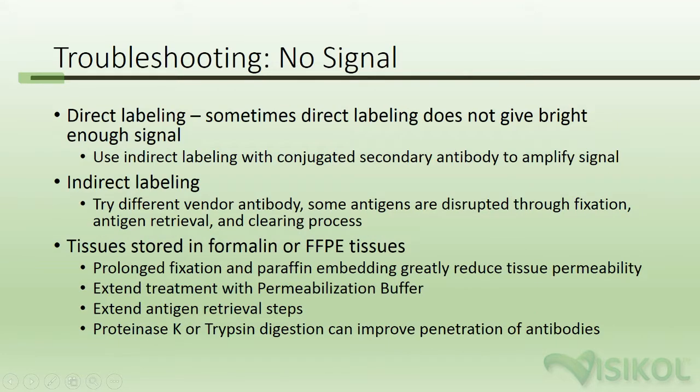What do you do if you see no signal? If you've used direct labeling, direct labeling sometimes does not give bright enough signal for three-dimensional labeling; you should use indirect labeling with a conjugated secondary antibody to amplify the signal. If you've used indirect labeling, you should try a different vendor's antibody. Some antigens are disrupted through fixation, antigen retrieval, and the clearing process and are not compatible with Visicol Histo. Please see our website for a list of antibodies that have been validated with Visicol Histo.